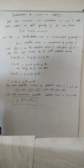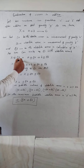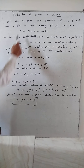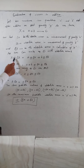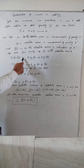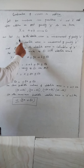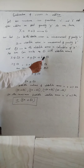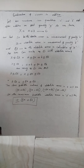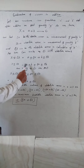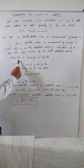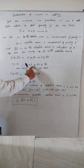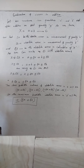Absolute error के साथ equation 1 को हम कैसे लिखेंगे? Absolute error को plus-minus sign के साथ दिखाया जाता है. So we write: X plus-minus delta X equal to (A plus-minus delta A) plus (B plus-minus delta B). Simplifying: X plus-minus delta X equal to A plus B plus-minus delta A plus-minus delta B.